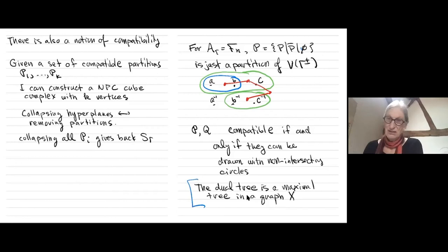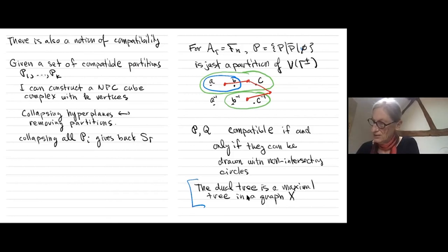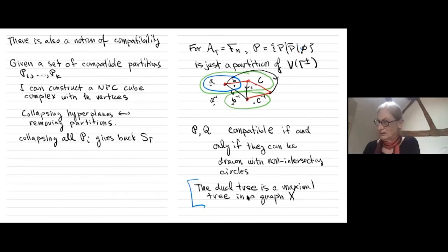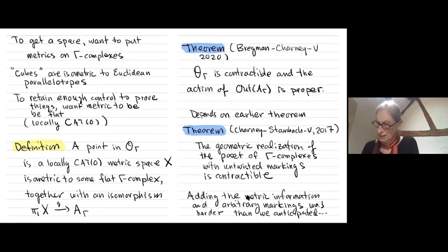That dual tree forms a maximal tree in a graph. To get the rest of the graph you add edges a, b, and c connecting the appropriate components. This is a familiar picture to combinatorialists — associating a maximal tree to a set of partitions and then building a graph from that.